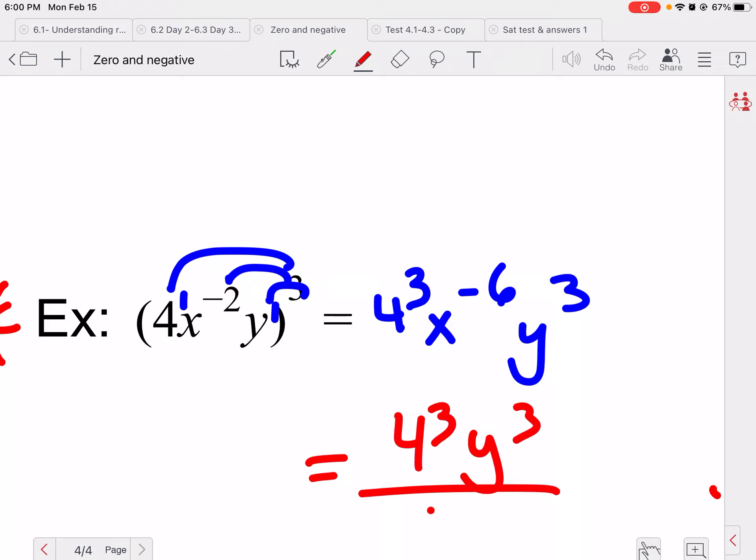Again, that is not my final answer, because negative exponent. So we have four to the third, y to the third, over x to the sixth.